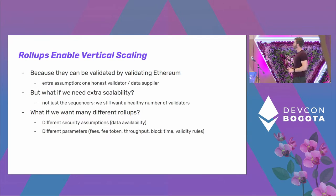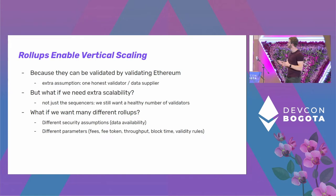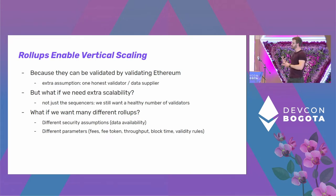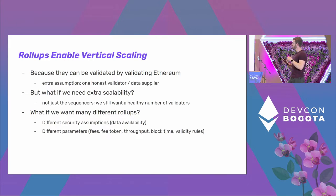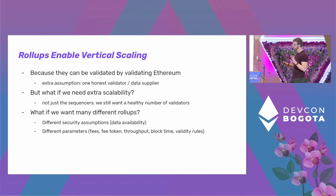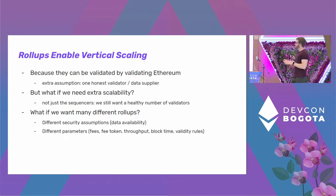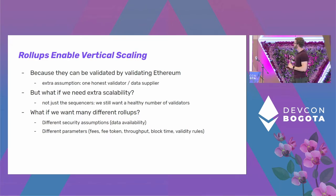We might want many different rollups — rollups with different security assumptions and different parameters, like different fee models, paying fees in a different token, increasing throughput, changing validity rules, maybe using a different VM. But you might still want to have multiple rollups talking to one another.